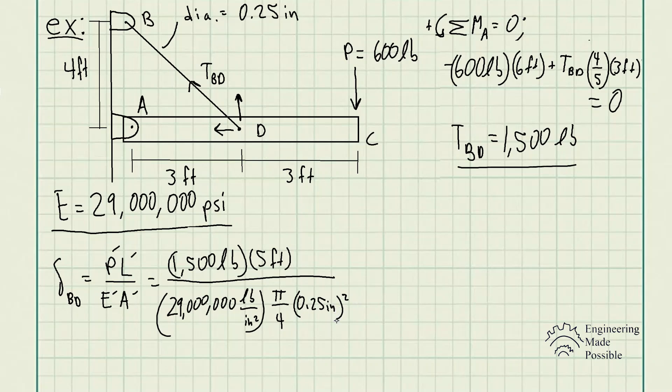When it comes to unit cancellations, the inches squared cancels, pounds cancels, and at the end of the day, we're left with the deformation in feet, which makes sense. However, when it comes to deformation, usually it's not significant enough to represent it in feet. We usually want to represent it in inches, so we do that unit conversion. 12 inches is equivalent to 1 foot, and we cancel out the footage.